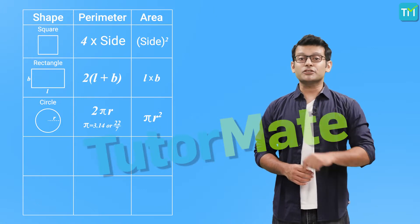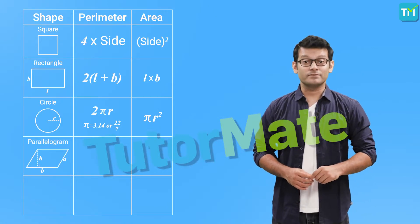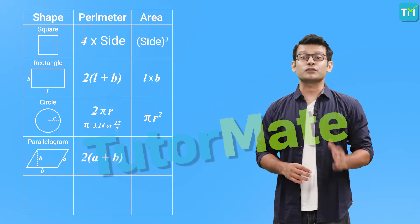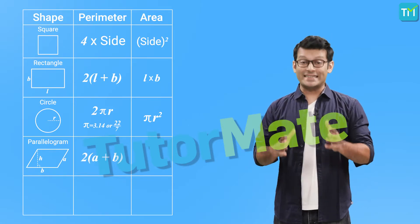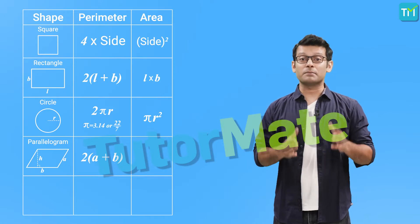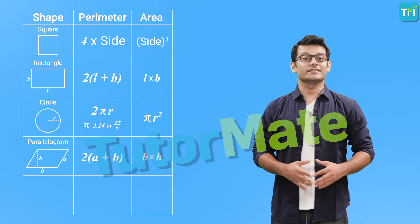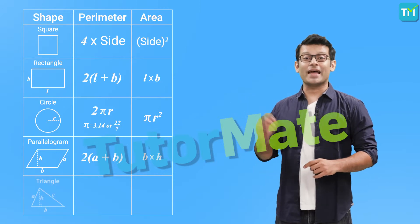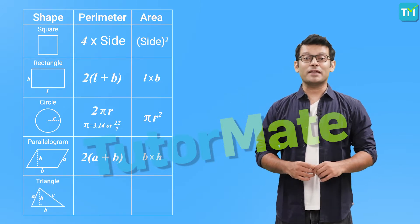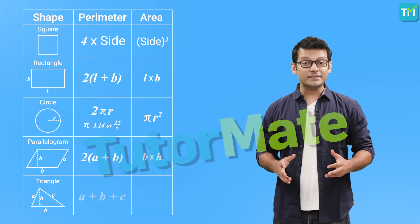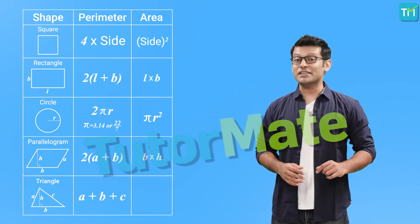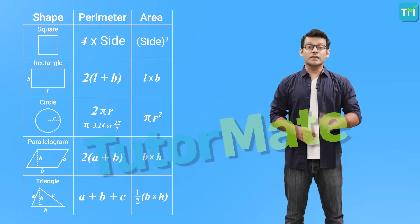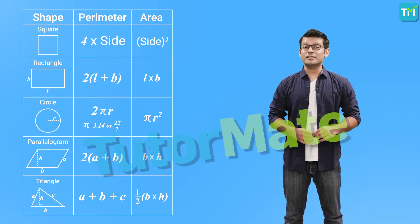A parallelogram has a perimeter equal to the sum of all four sides, and its area is base times height. A triangle has a perimeter equal to the sum of all three sides, and its area is half times base times height. These are the basics of measuring perimeter and area of various shapes.